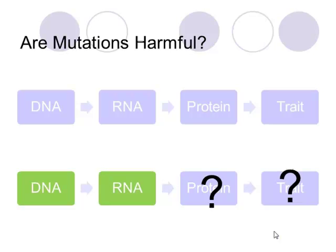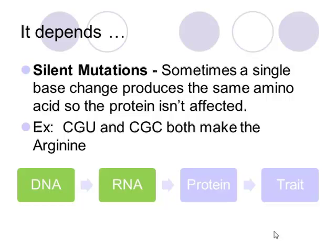Are mutations harmful? Our classic central dogma of genetics is DNA → RNA → protein → trait. So if the DNA changes, and therefore the RNA changes, will the protein and the trait change? Sometimes we have silent mutations. For example, we might have a mutation where we should have a CGU codon, but instead we have CGC. Both of those codons code for arginine — the same amino acid. So since that does not change, this mutation does not impact the trait.